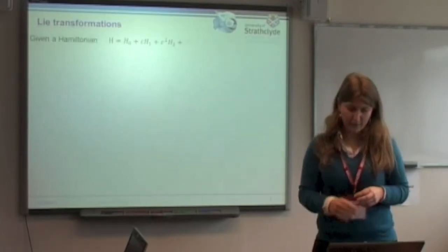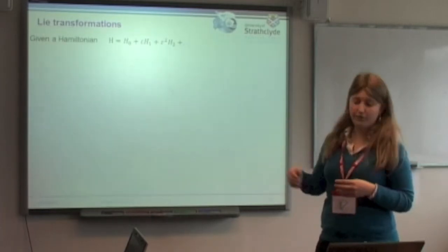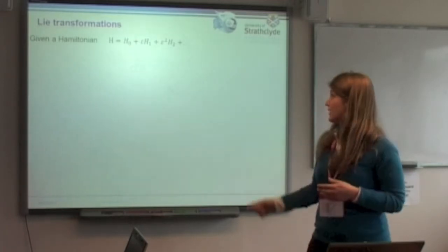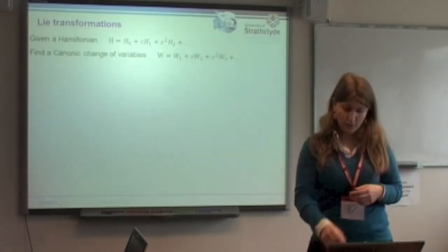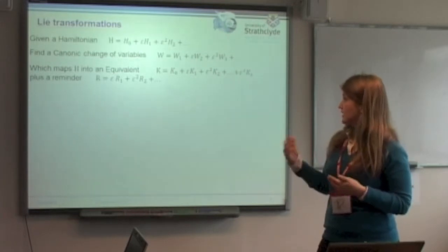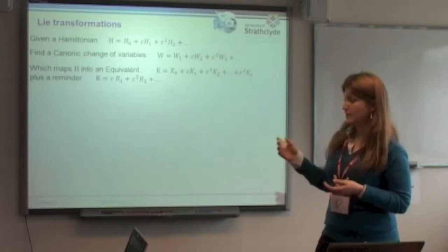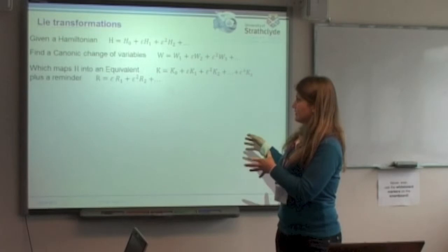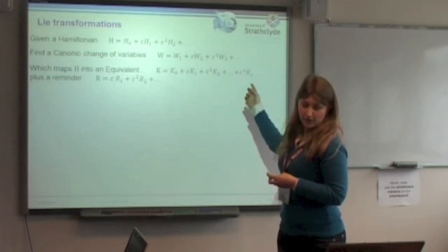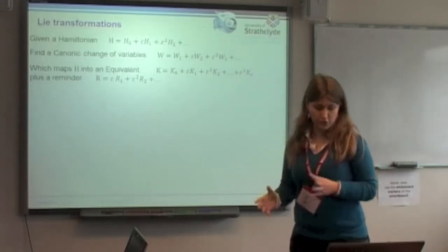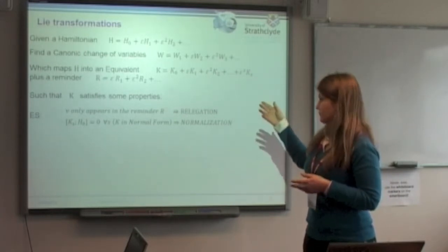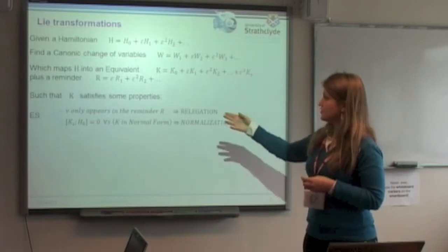The whole procedure is done by the Lee transformation. So the whole procedure that we have seen before, both the relegation and the normalization, will be done by the Lee transformations, which given a Hamiltonian developed by a small parameter, will enable us to find a canonic change of variables, which will map the initial Hamiltonian into a new Hamiltonian plus a remainder. Both the normalization and the relegation will bring the variable that we have set before into the remainder. The process of the Lee transformation will allow us to find the new Hamiltonian equivalent to the first one, such that it satisfies some property.